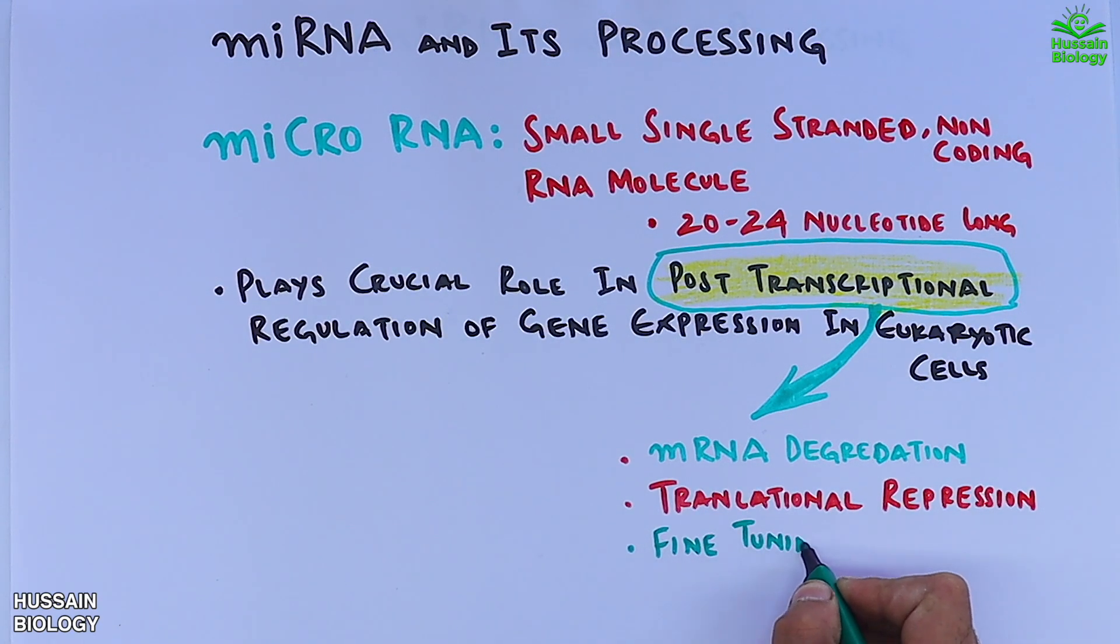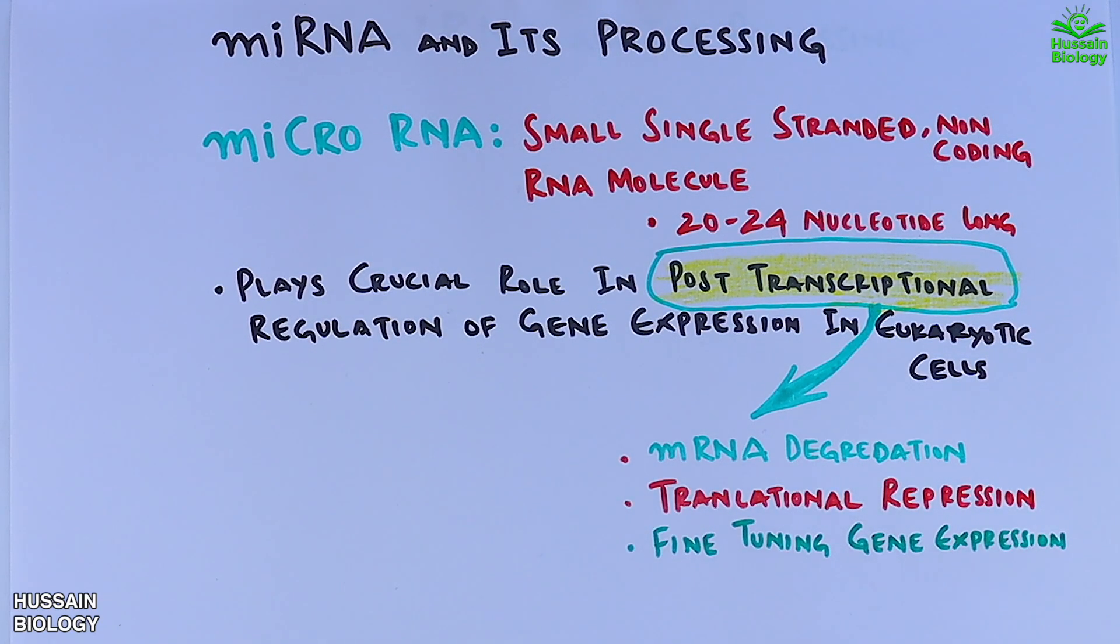And third is fine-tuning gene expression. miRNAs do not always completely shut down gene expression. Sometimes they fine-tune it to ensure the right levels of proteins are produced. So these are the three basic mechanisms by which genes are regulated.